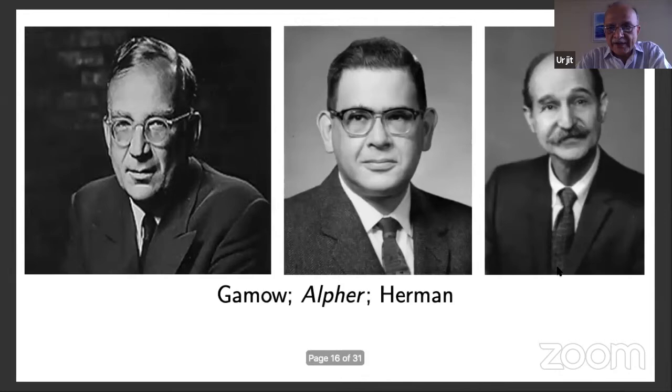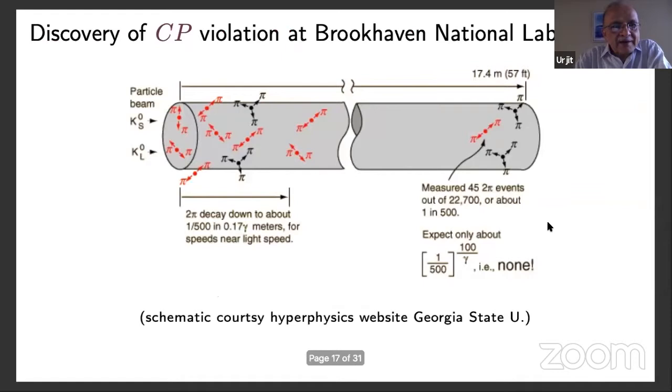So here is the picture of the three people. Alpher Herman, Ralph Herman, in his later life was at UT Austin, where I was a student. But then, Herman had switched to civil engineering doing transportation engineering. The other great discovery of the mid-60s was CP violation at Brookhaven National Lab.